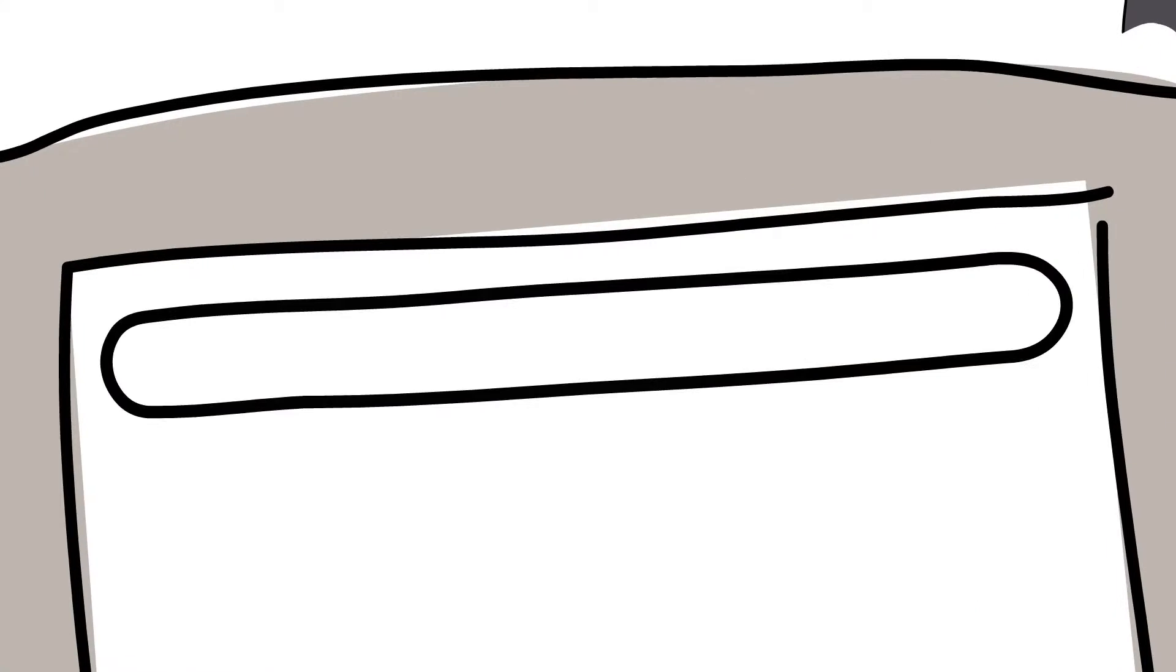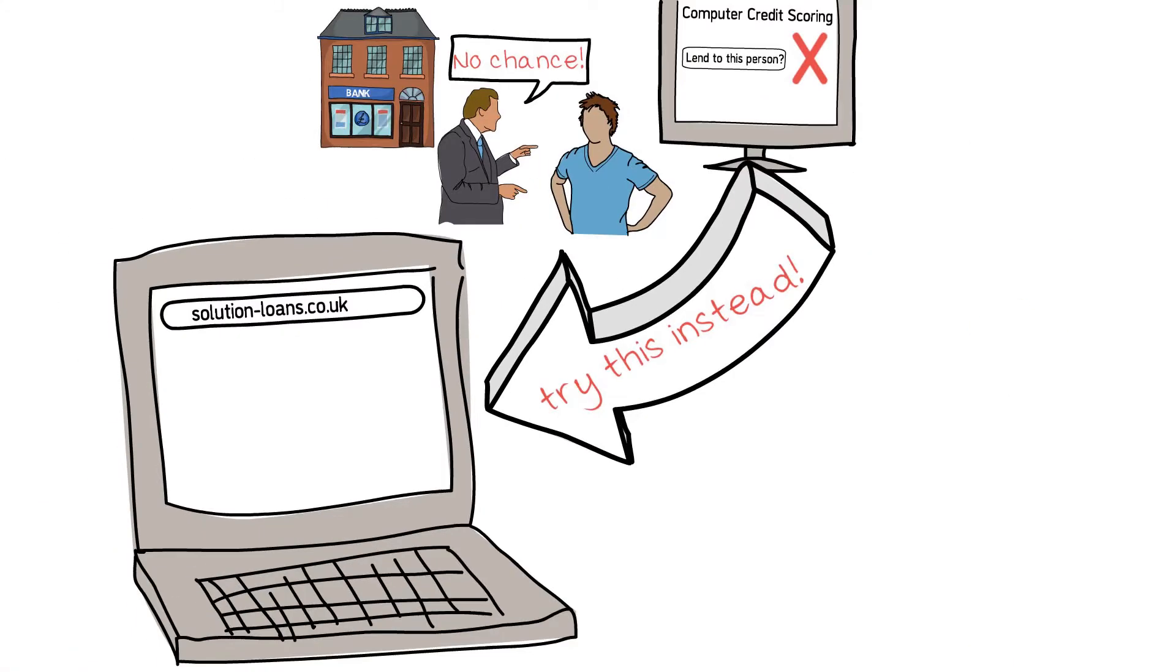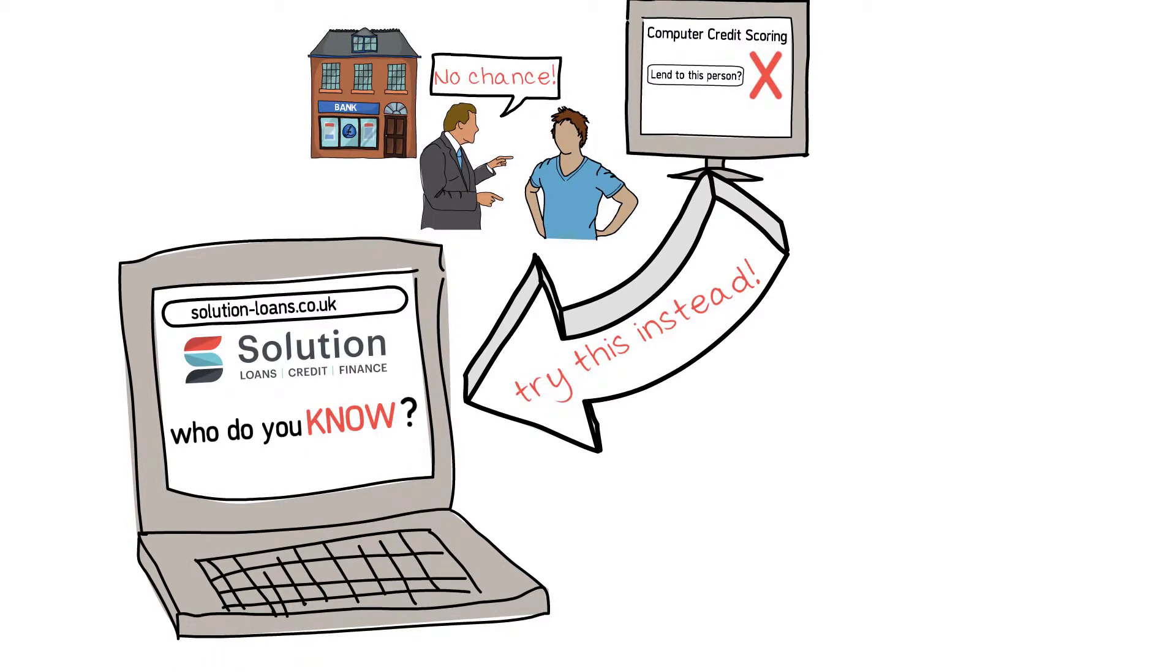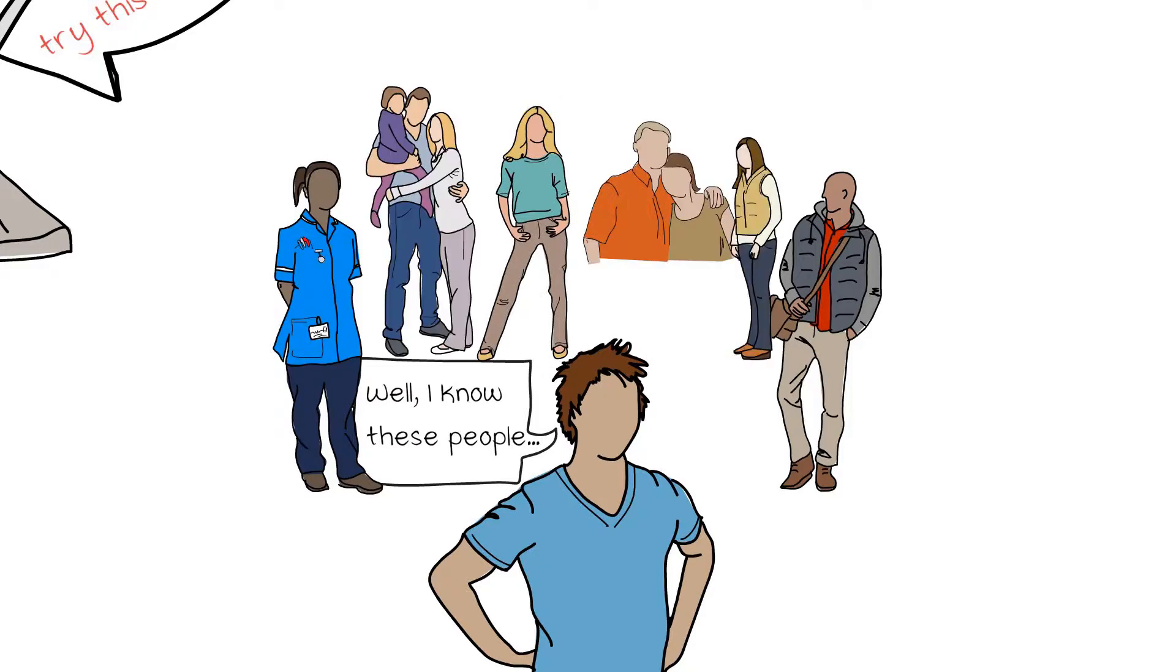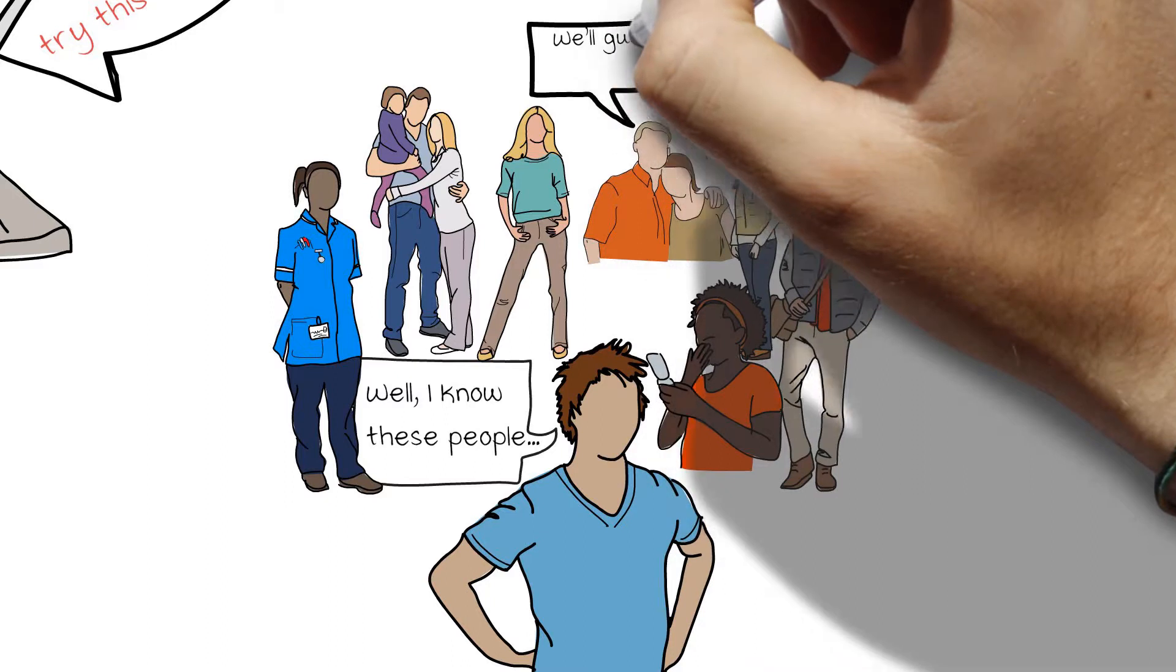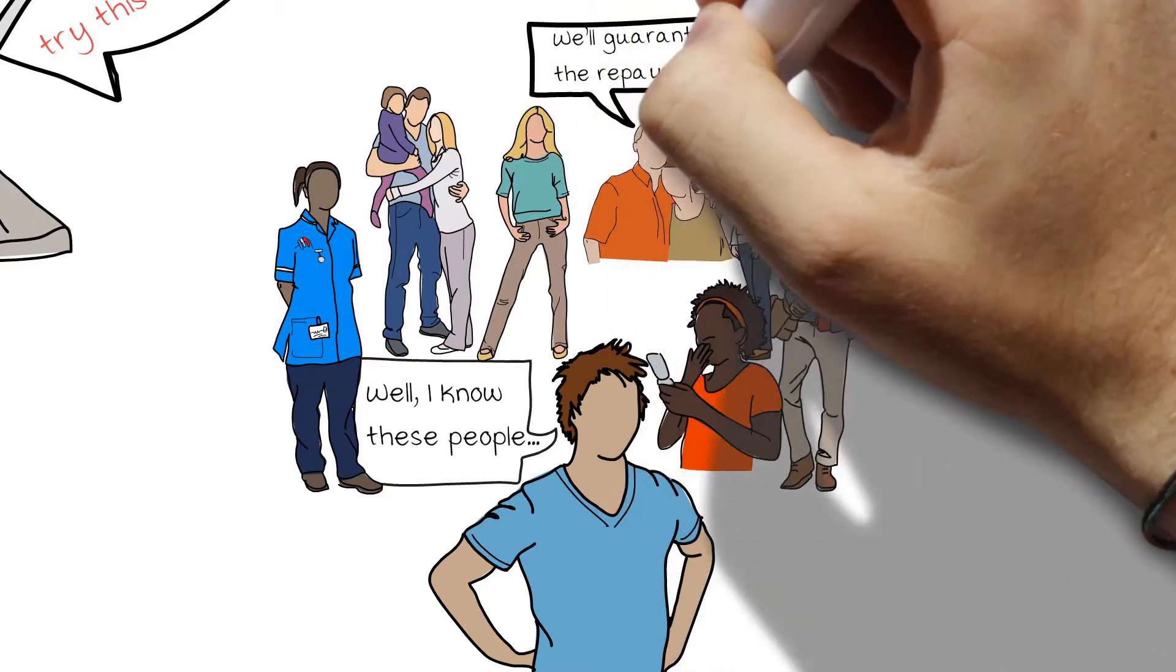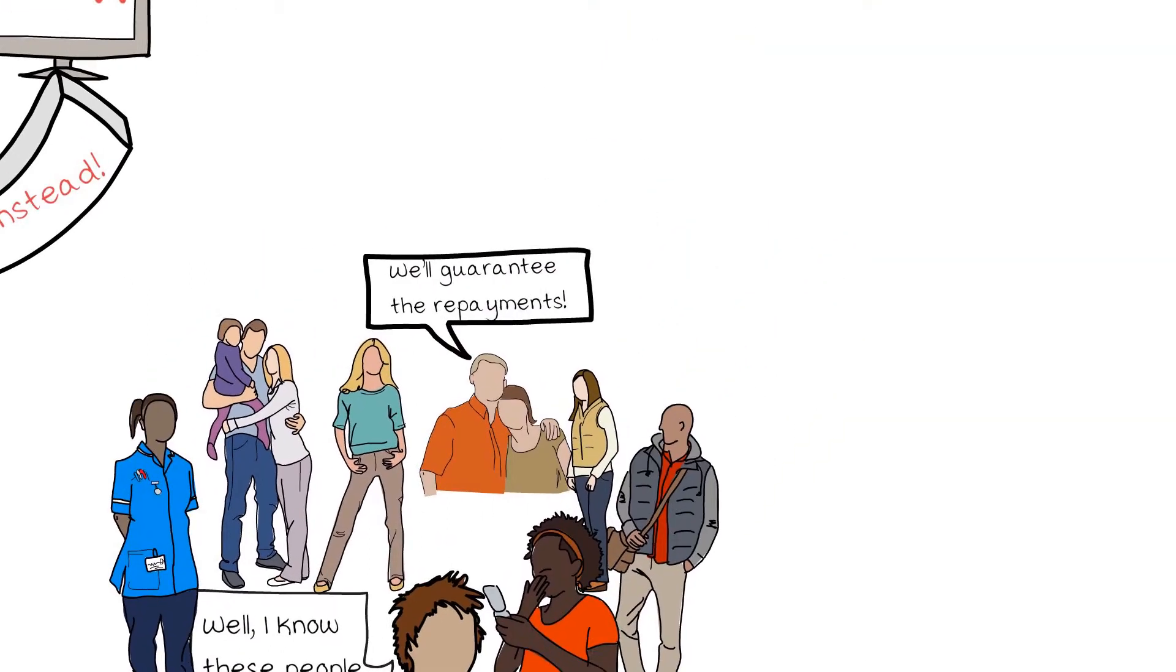You need a lender who sees your social network as more important than your credit history. If you have a close friend or family member who will guarantee your loan repayments, then there's almost certainly a lender who can help.